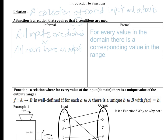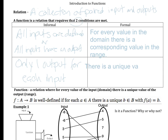There is a second requirement for a function, and that is there's only one output for each input. A more formal way of saying that would be that there is a unique value in the range for each value in the domain.